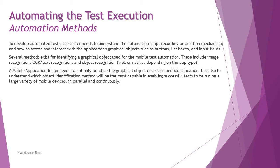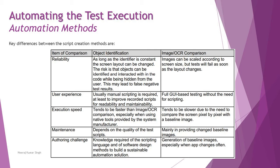Not all objects can be identified with the same approach, so you need to identify various approaches to identify several objects on the screen. We are talking about the key differences between script creation methods — specifically two important methodologies for creating automation scripts: object identification and image or OCR comparison.